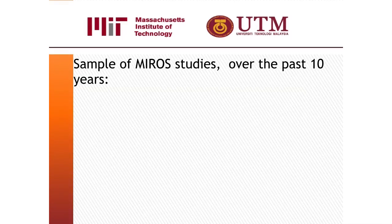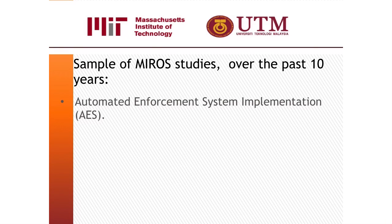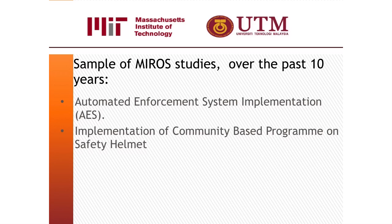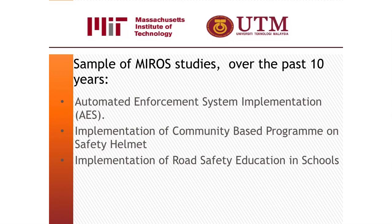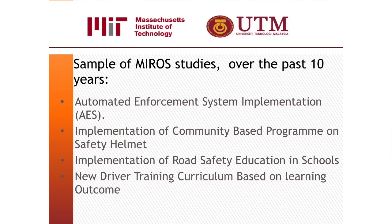What are the efforts by the Malaysian government to reduce traffic accidents? According to an official at the Malaysian Institute of Road Safety Research, MIROS, the following are examples of studies undertaken over the past 10 years: automated enforcement system implementation using cameras at intersections to report traffic violations, implementation of a community-based program on safety helmets, implementation of road safety education in schools, and a new driver training curriculum based on learning outcomes.